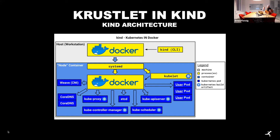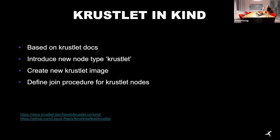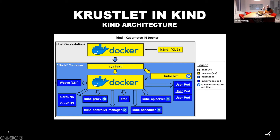The kind architecture is like this: you have a host system that runs a container, and inside the container is everything needed for a Kubernetes node. The most important part is the Kubelet that starts containers. Our idea was to introduce a new node type using not a Kubelet but a Krustlet. We took the guide from the documentation, created a new image containing only a Krustlet, and defined a new join procedure for how that node can join the cluster.